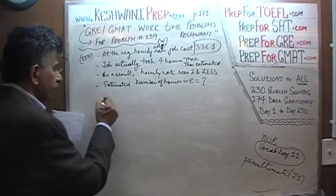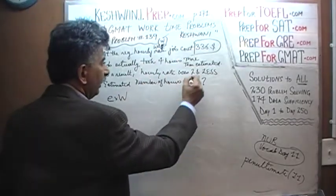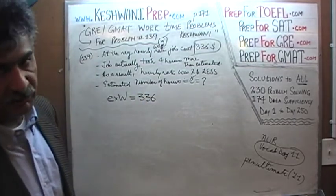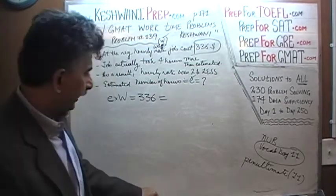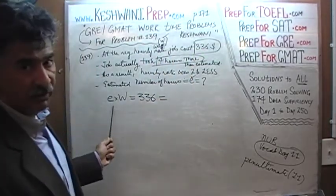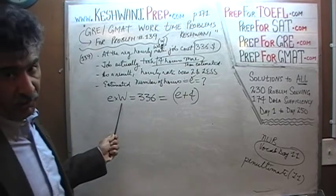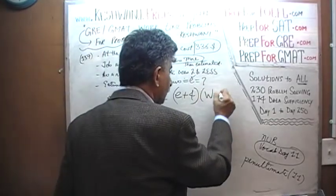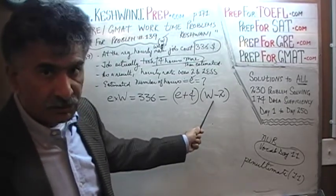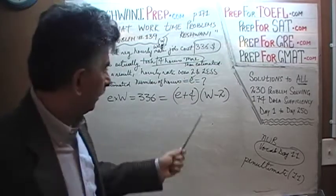We know that his estimated number of hours was E and his hourly wage is W. If you multiply these two quantities together, that should equal the amount he quoted for the job, which is $336. We are also told that the job ended up taking him four more hours. So his actual hourly wage turned out to be W minus 2. His actual hourly wage, W minus 2, times the actual number of hours, E plus 4, also has to equal $336, because that's what he had quoted and that's what he got. So these two quantities are equal.